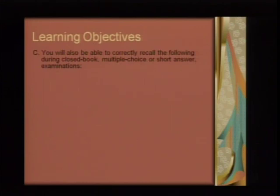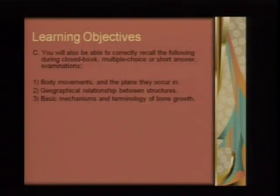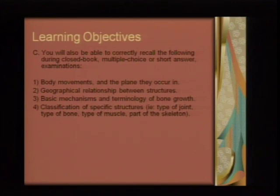In the closed book sections — multiple choice or short answer — you're going to learn about the body movements and the planes that they occur in. We'll talk about the geographical relationship between structures: if you know where a certain bone in the face is, do you know where another bone is in comparison — superior, inferior? You'll need to understand anatomy not just in isolation but how structures relate to one another. We'll also cover mechanisms and terminology of bone growth, and classification of different structures such as types of joints, bones, and muscles.